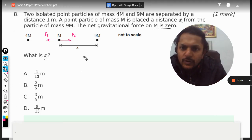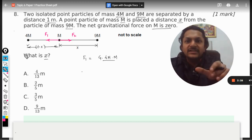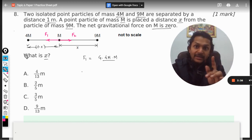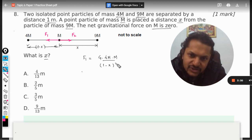Let us first write the expression for F1. F1 is between 4m and m, so it will be G into 4m multiply by m divided by distance squared. Now what is this distance? This distance will be taken as 1 minus x because the total distance is 1 and this distance is given as x, so it will be (1 minus x) squared.